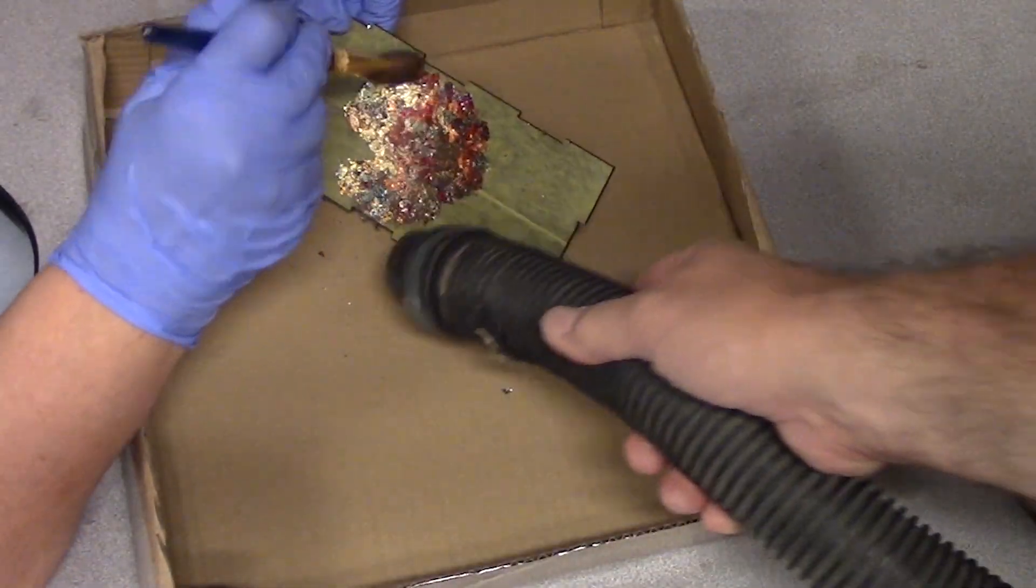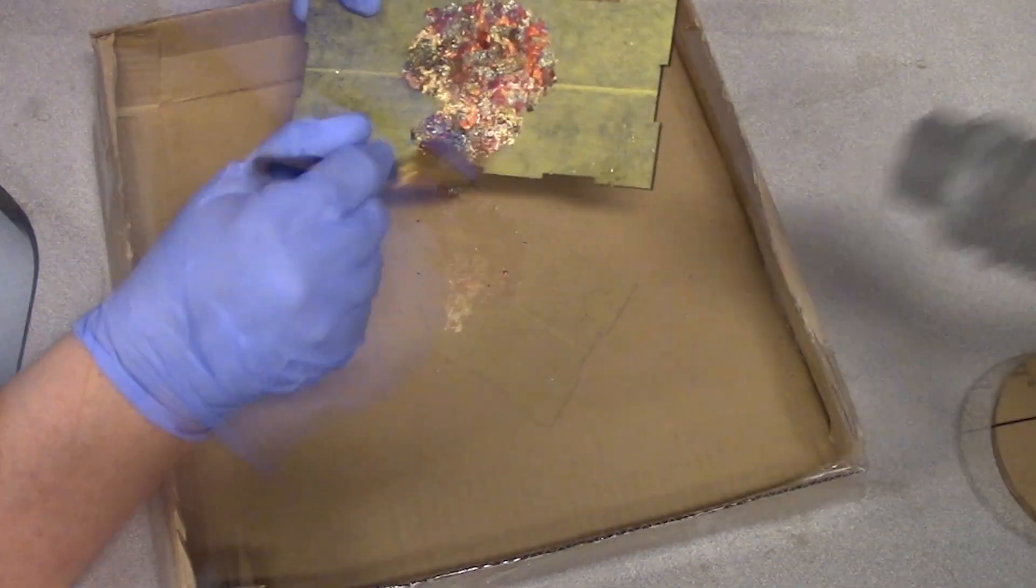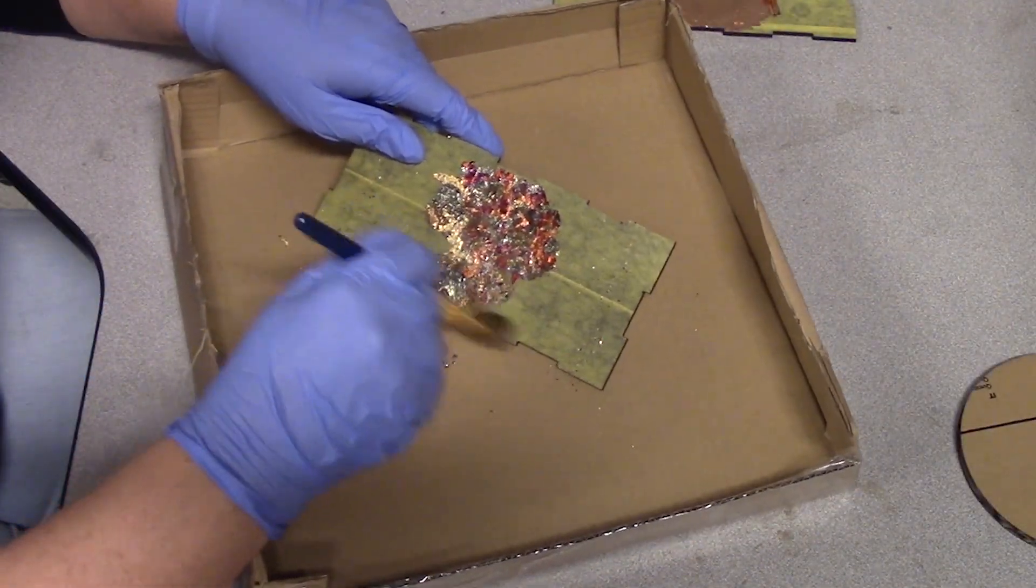The gilding flakes in particular are pretty messy, so it's helpful to have the vacuum and even an extra hand when you're working with it.